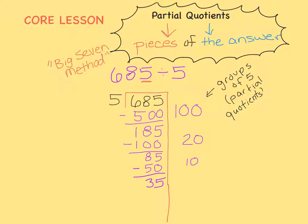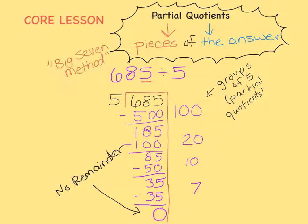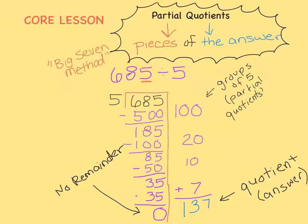What can I multiply by 5 to get to 35? 5 times 7 equals 35. When I subtract, I'm left with 0. This means there's nothing left over — there's no remainder. Here are all of our Partial Quotients down the side; these were all the pieces that we took away. How many groups of 5 did we actually take away from 685? Add them all together. When we add our Partial Quotients, we get 137. 137 is our answer.